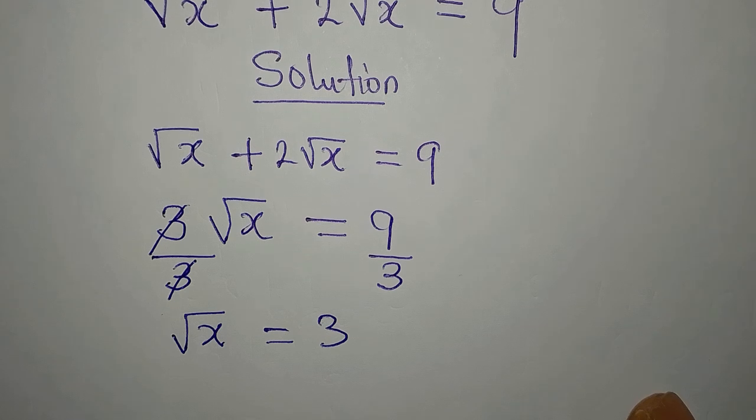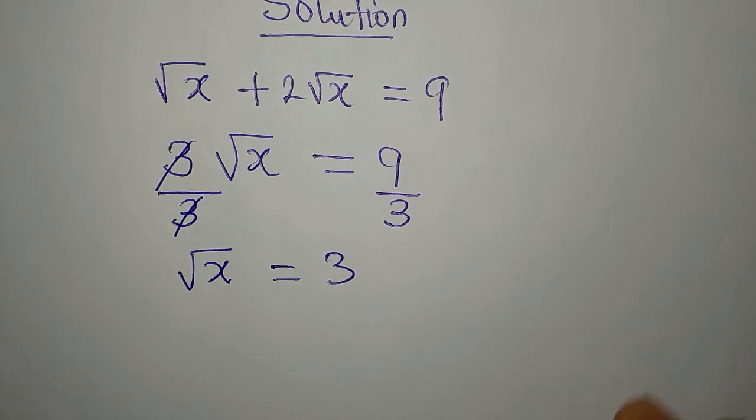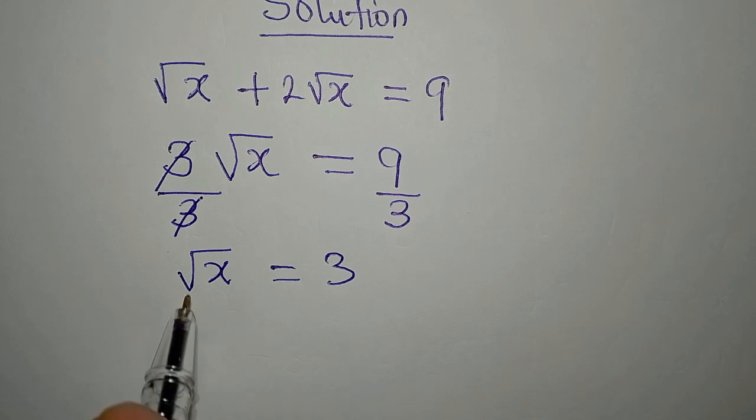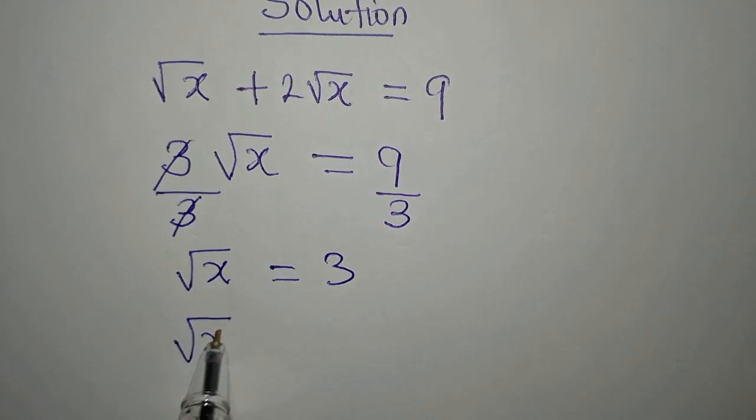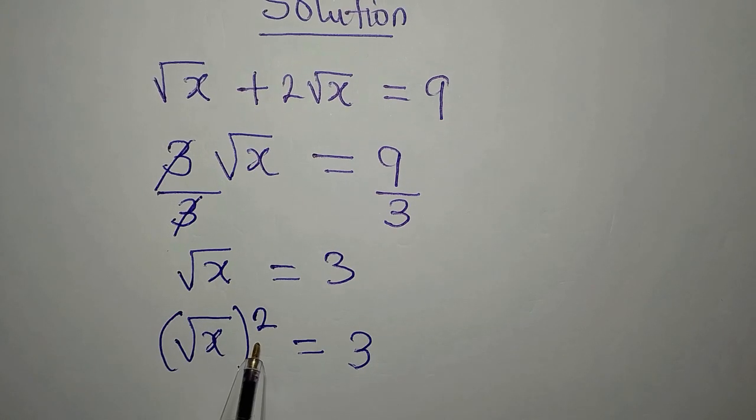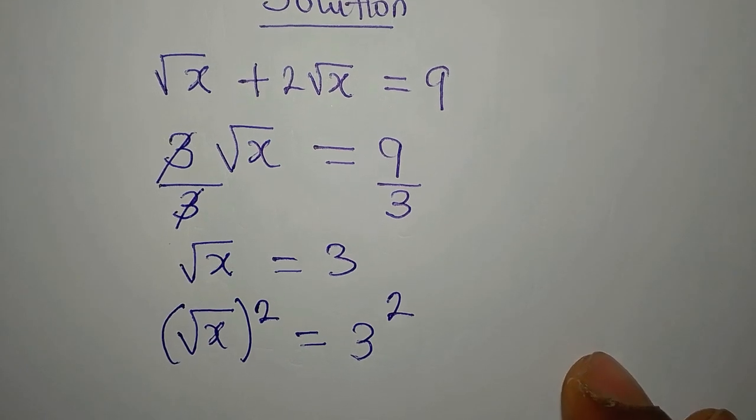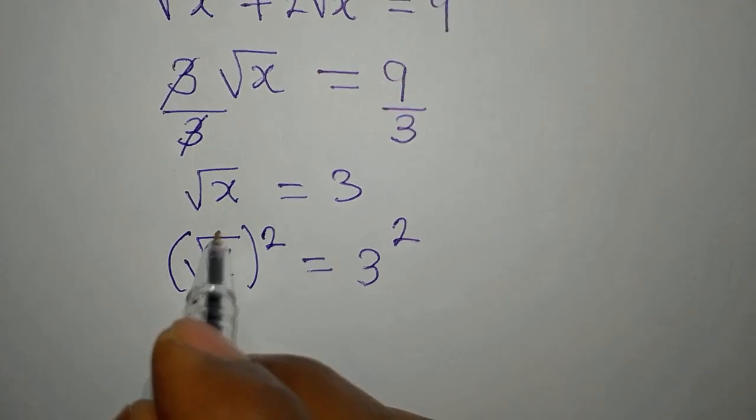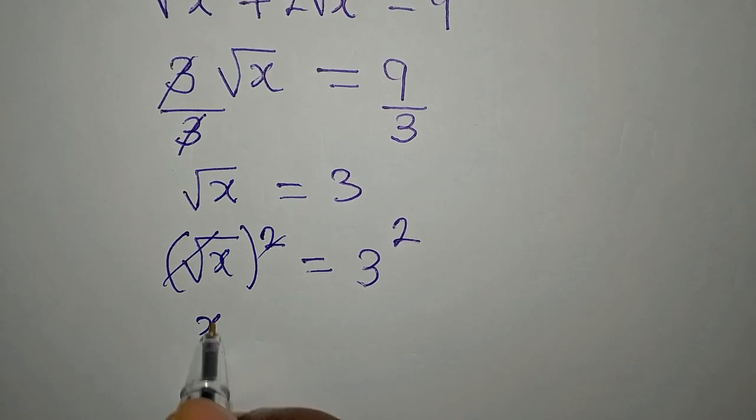Right, from here now we can see that we are having square root of x instead of x. So we are going to square this so that the square root can be gone. And if you square the left, you should also square the right hand side.